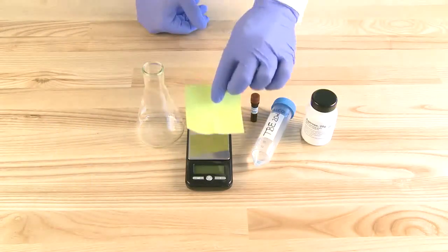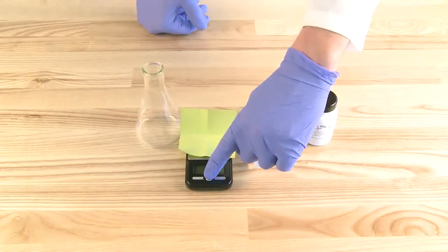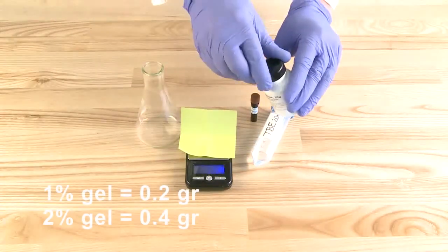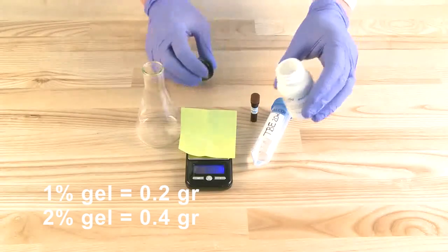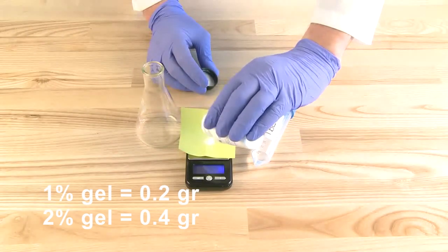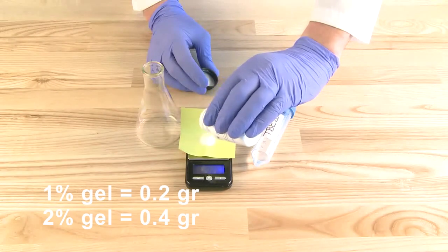Start by placing the weighing boat on the scale and setting it to zero. Measure an appropriate amount of agarose. For a 1% gel, weigh 0.2 grams of agarose. For a 2% gel, weigh 0.4 grams of agarose.